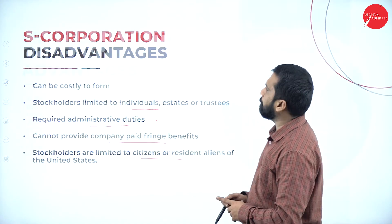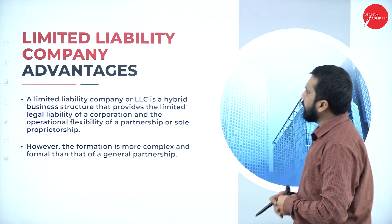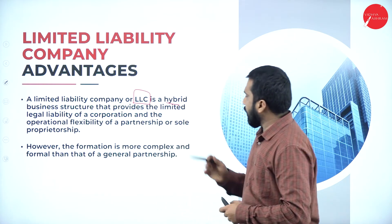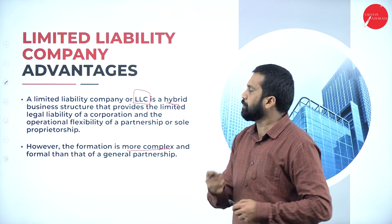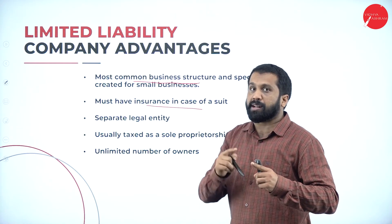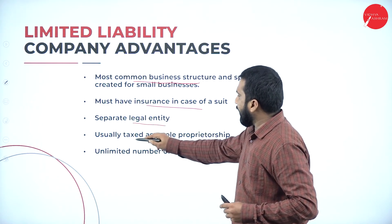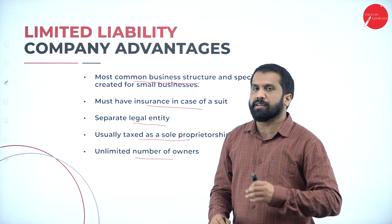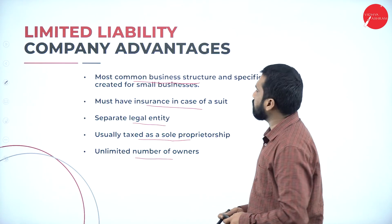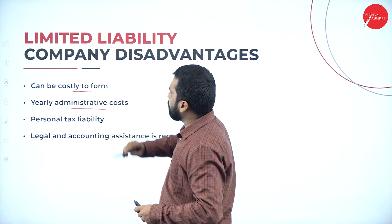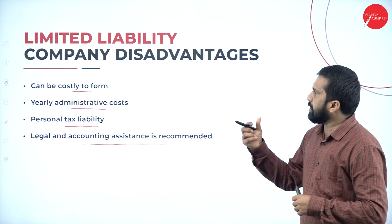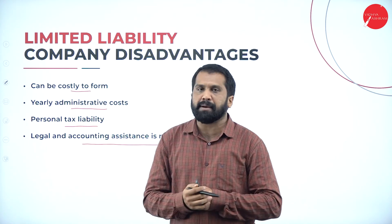Limited Liability Company (LLC): an LLC is a hybrid business structure, more complex to construct or form. Advantages: most common business structure, insurance in case of a suit (filing a case), separate legal entity, taxed as sole proprietorship, and unlimited number of owners — if you hold one share of Infosys, you also become an owner. Disadvantages: can be costly to form, yearly administration cost, personal tax liability, and legal and accounting assistance is recommended.